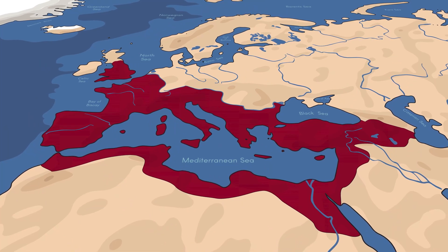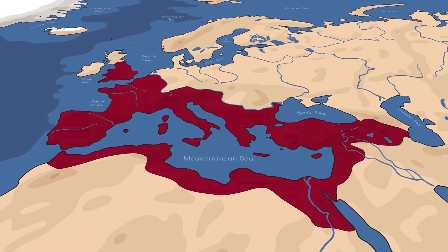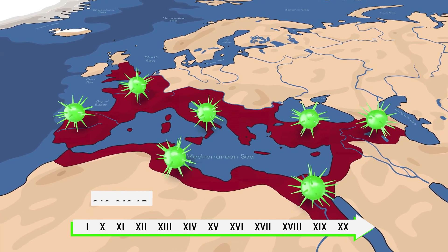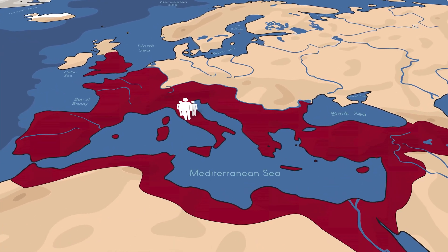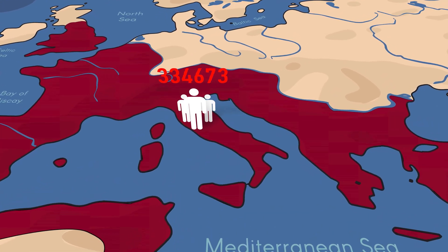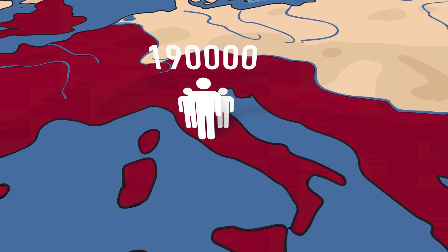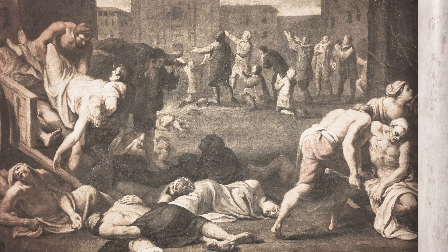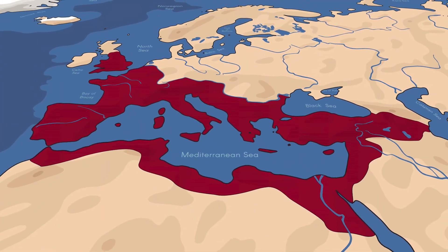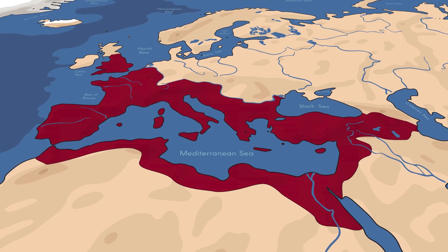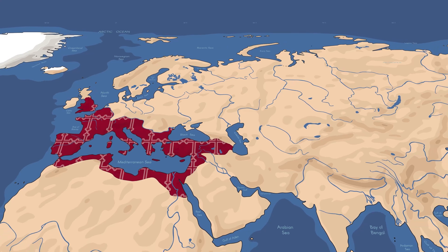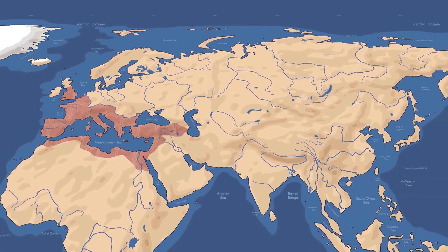It is assumed that the next significant epidemic, the Plague of Cyprian (249–262), was caused by measles. As a result, the population of the city of Rome decreased from about 500,000 to 190,000 people. These pandemics led to a significant depopulation of the Roman Empire, an increase in the cost of manual labor, and a reduction in the profitability of slavery. In addition, these fearful misfortunes led to the Romans' disillusionment with the old beliefs and the spread of Christianity as a religion of salvation and hope.